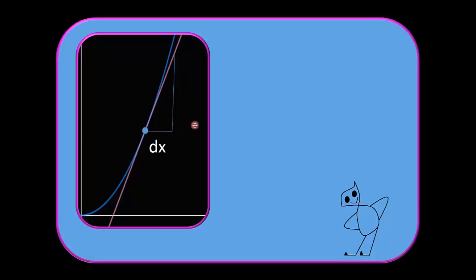Then I go up the corresponding amount. I make a right turn here and go up until I hit the tangent, and I've got the change in y. Now remember, the slope of that tangent — which we learned in Algebra 1 — was the change in y over the change in x, which is exactly what this is: the change in y over the change in x. And of course, that equals the derivative.